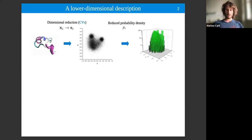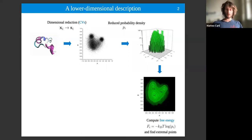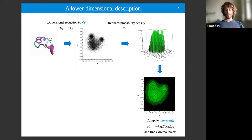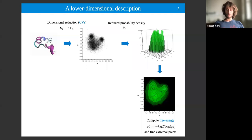Once I have the probability density, I can compute the free energy by taking minus k_B T times the logarithm of the probability density. When I have it, I can find extremal points — landmarks on this landscape: maxima, minima, saddle points — and characterize what kind of landscape the degrees of freedom traverse during a molecular simulation.